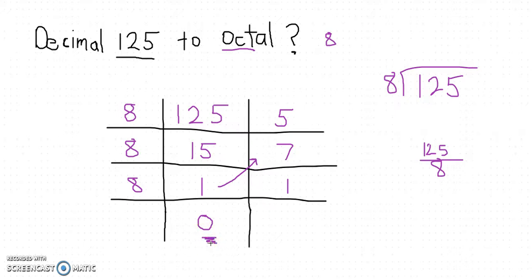Then you're going to read the numbers from bottom to top - bottom to top. You're going to go 1, 7, 5. So the answer is 175. Decimal 125 equals octal 175. Hope that helps, thanks guys.